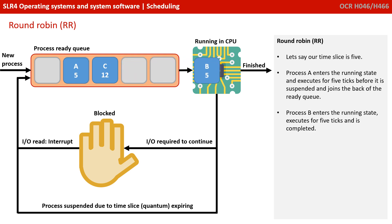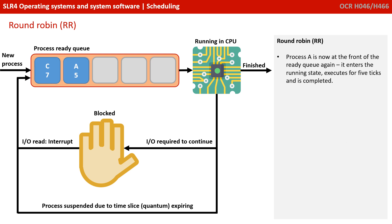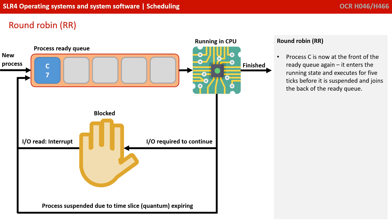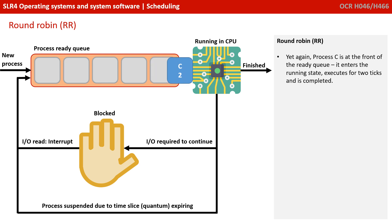Process B enters the running state, executes for 5 ticks and is now complete so it finishes. Process C enters the running state, executes for 5 ticks before it's suspended and joins the back of the ready queue. Process A is now at the front of the ready queue again — it enters the running state, executes for 5 ticks and is now completed so it leaves. Process C is now at the front of the ready queue, enters the running state, executes for 5 ticks before being suspended and rejoining the back. Yet again Process C is at the front, enters the running state, executes for 2 ticks, and is completed.